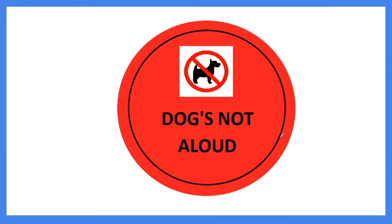Now that you have been able to find the corrections, let's see what this sign should say. The first error that I made was in the word dogs. When written with an apostrophe, the word dog's becomes a possessive noun rather than a plural noun. Without the apostrophe, we get the plural form, which is better in the context of this sign.